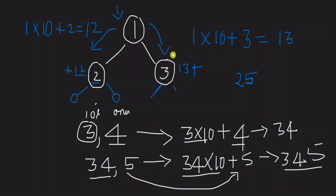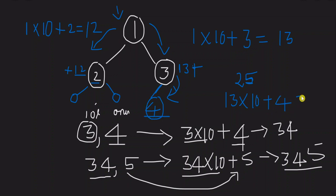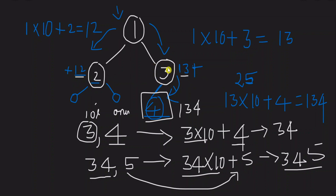For another example: we have root 1, then node 3, then left child 4. We have 13 already. Then 13 × 10 plus 4 gives 134. Node 4 is a leaf node, so 1→3→4 is a root-to-leaf path giving 134. We add 134 to the final answer.